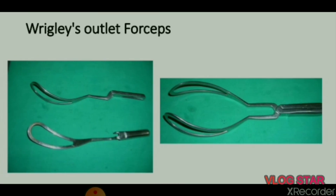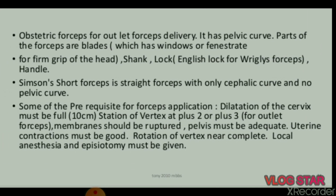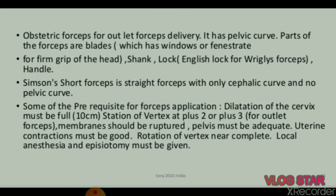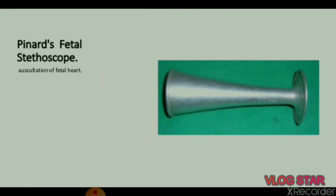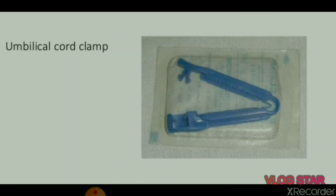Vacuum extractor: Ventouse cup for vacuum extraction. Obstetric forceps for outlet forceps delivery — it has a pelvic curve. Parts of the forceps are blades which have windows or fenestries. Wrigley's outlet forceps is a straight forceps with only a cephalic curve and no pelvic curve. Indications: uterine contractions must be good, rotation of vertex near complete, local anesthesia, and episiotomy.